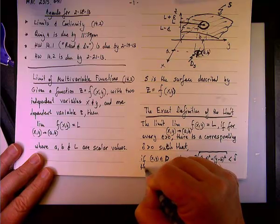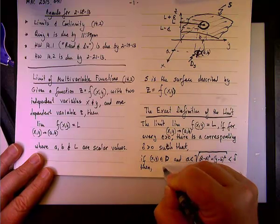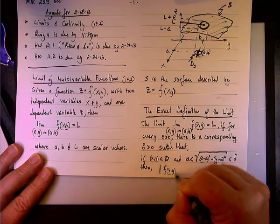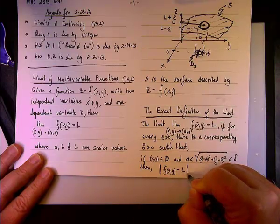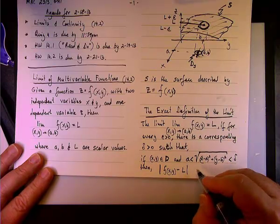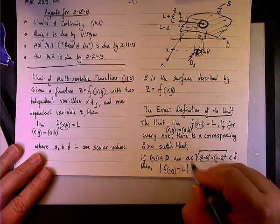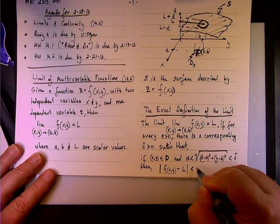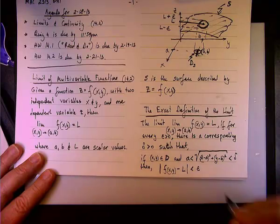Okay? So what happened then? Then, the absolute value of f minus L, this is exactly what we had in calculus 1, is less than epsilon.